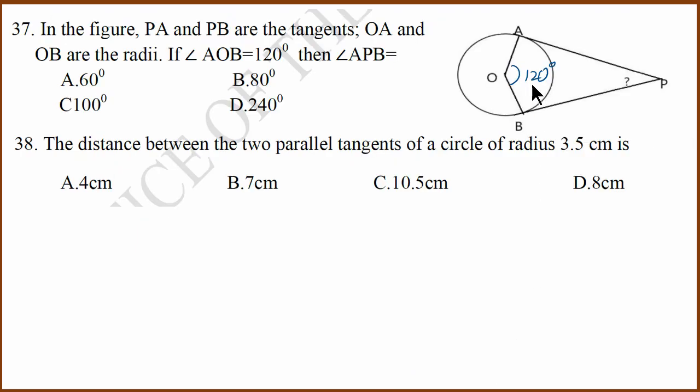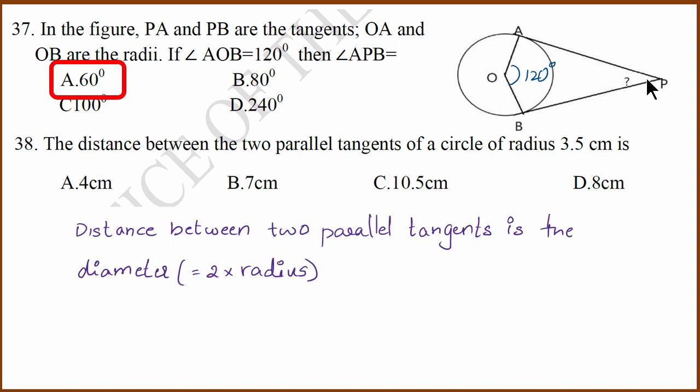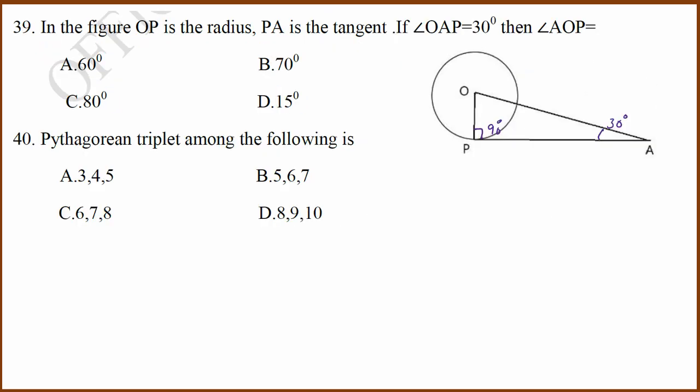37th question. They have given this angle 120 degrees, they've asked you to find this angle, and it's 60 degrees because angle between the radius and angle between tangents add up to 180. The distance between two parallel tangents is diameter, which is 3.5 times 2, which is 7 centimeters. Last two questions: they've given this angle is 30 degrees. We know this angle is 90 degrees because tangent is perpendicular to radius. Internal angles of the triangle add up to 180 degrees, which means this angle is 60 degrees.